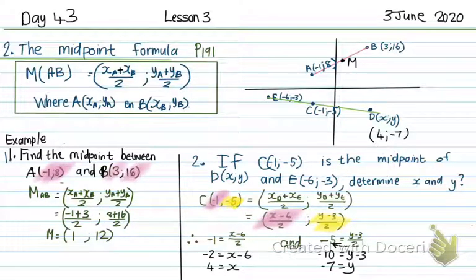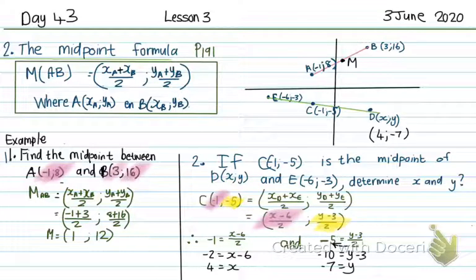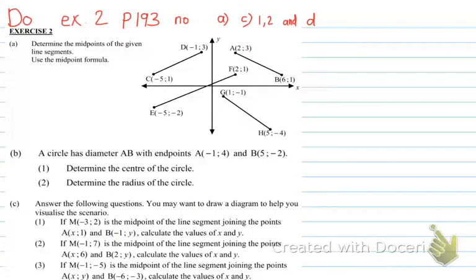Those are the 2 ways that they ask the midpoint. There are more indirect ways, but those are the 2 methods you need to know. Next, you're going to do Exercise 2 on page 193, numbers A, C1, C2, and D.